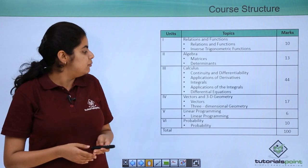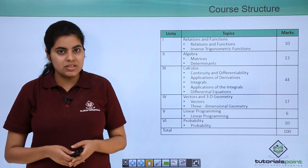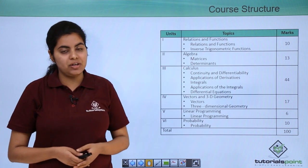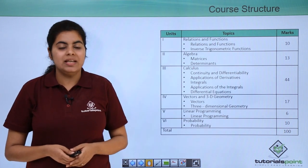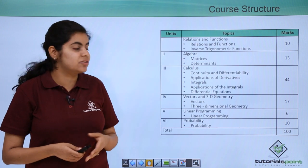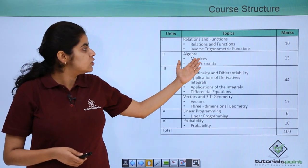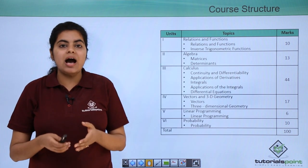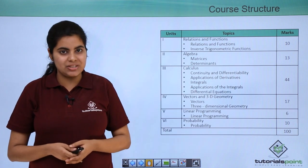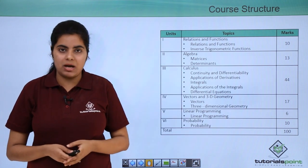We have namely 6 units in our syllabus. The name of the first unit is relations and functions, and it has 2 chapters under it. The first chapter is relations and functions, and the second chapter is inverse trigonometric functions. Both these chapters are covered under the same first unit. This unit has overall weightage of 10 marks.